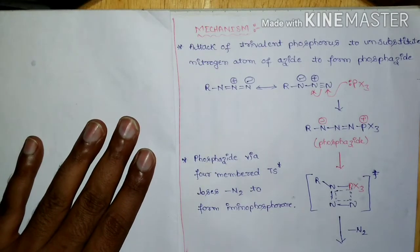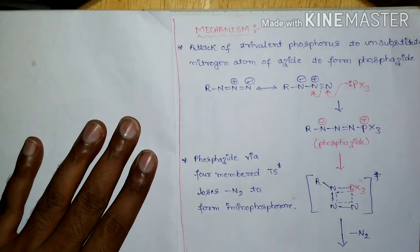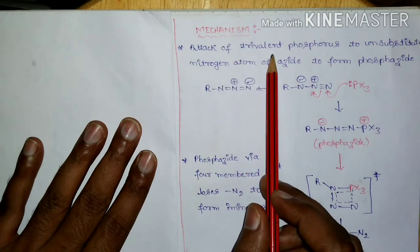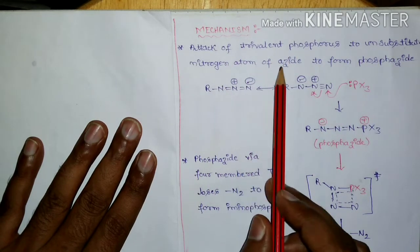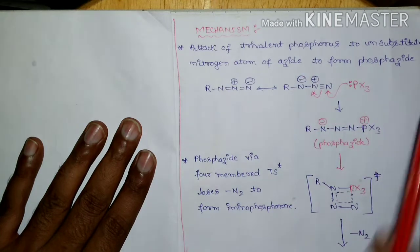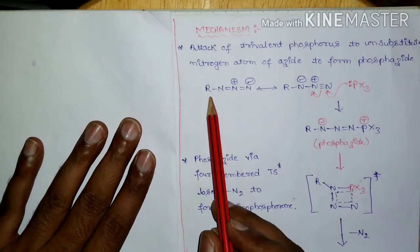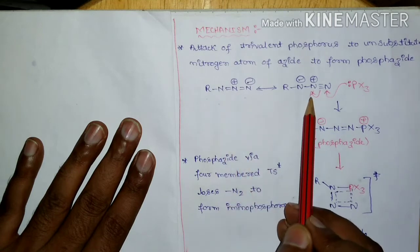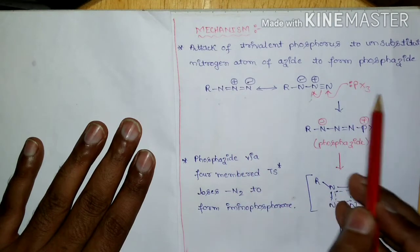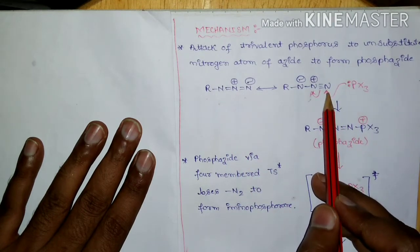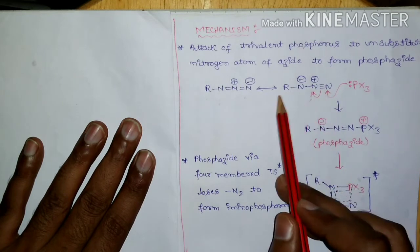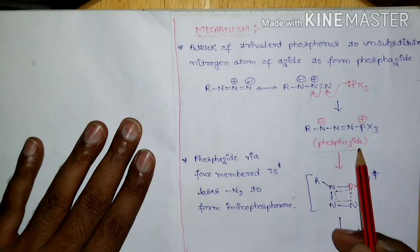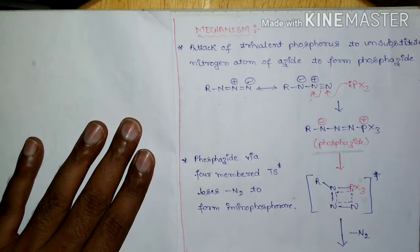The mechanism of the Staudinger reaction is as follows. The first step is the attack of the trivalent phosphorus on the unsubstituted nitrogen atom of the azide to form a phosphazide intermediate. The azide is in resonance form, and this trivalent phosphorus attacks the unsubstituted nitrogen atom of the azide molecule, leading to the formation of the phosphazide intermediate.